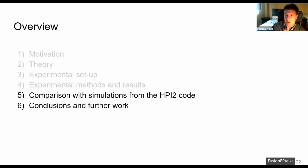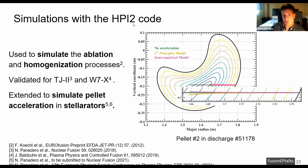I will continue with the comparisons with the simulations. And for the simulations, we use the hydrogen pellet injection code, which is a well-known code to simulate the ablation and homogenization processes of the pellet that was recently validated for TJ2 and Wendelstein 7-X and also recently extended to simulate the pellet acceleration in stellarators, according to the previous mentioned models, the semi-empirical and the first principal models.